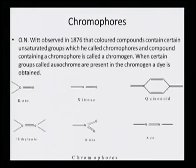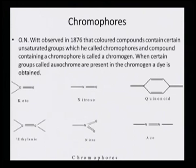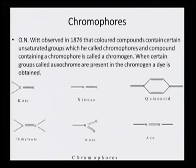Looking at various types of chromophores: Witt observed in 1876 that colored compounds contain certain unsaturated groups called chromophores, and the compound containing a chromophore is called a chromogen. When certain groups called oxochromes are present in the chromogen, a dye is obtained. So a combination of chromophore and oxochrome creates a dye. The various types of chromophores are: keto group, nitroso group, quininoid group, ethylenic group, nitro group, and azo group.